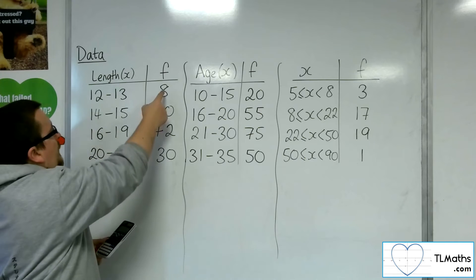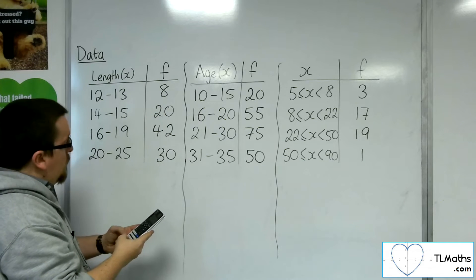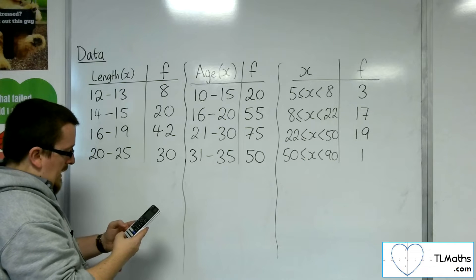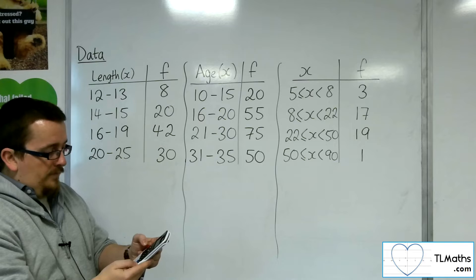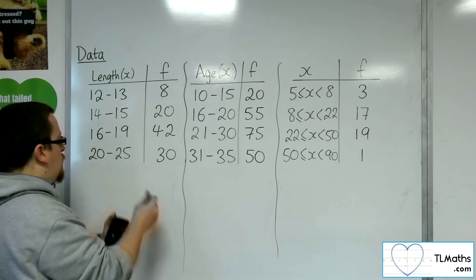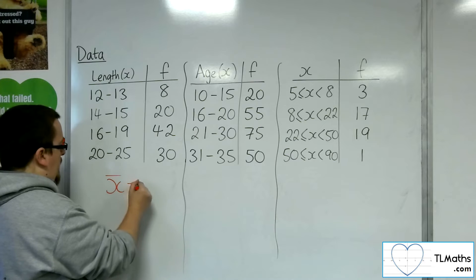Then pop in the frequencies, 8, 20, 42, and 30. And then press the AC button, then option, then number 2, and you should find x bar's right at the top as 18.